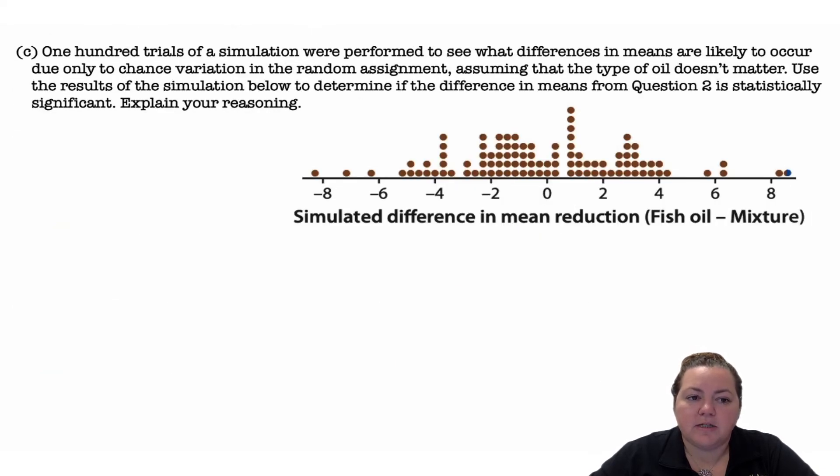Now part C: 100 trials of a simulation were performed to see what differences in the means are likely to occur due to chance variation in the random assignment, assuming that the type of oil doesn't matter. Use the results of the simulation below to determine if the difference in means from question 2 is statistically significant. So essentially, they took those numbers that we had and they just shuffled them up and randomly assigned 7 of the outcomes to the fish oil group, 7 to the mixture group, got the mean difference, fish oil minus mixture, and put that as a dot on here.